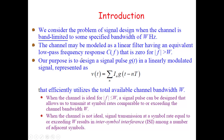The channel is random in communication systems and can be modeled as a linear filter having an equivalent low-pass frequency response which is zero outside the range minus W to W. Within minus W to W the channel response is present, but outside this range it is assumed to be zero. That means the channel is considered as a filter when modeling the concept of inter-symbol interference.